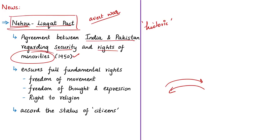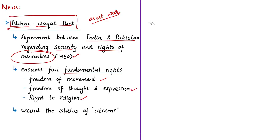The Nehru-Liaquat Pact aimed to lessen fear of religious minorities, end communal riots, and create an atmosphere of peace. Both governments agreed to ensure complete and equal citizenship rights, security of life and property for minorities, and full fundamental human rights including freedom of movement, freedom of thought and expression, and freedom of religion. In short, the pact guaranteed full rights and citizen status to their respective minorities.